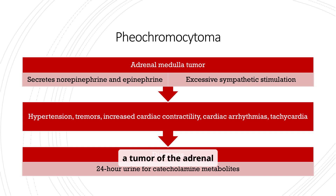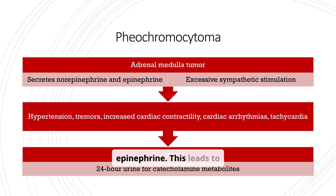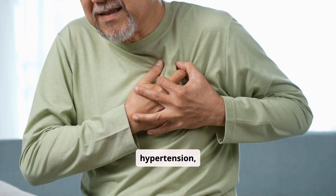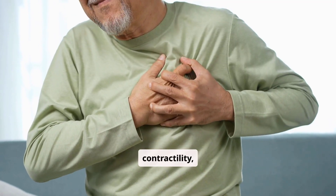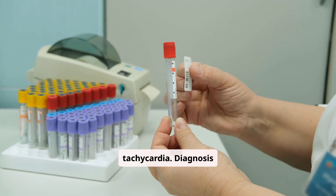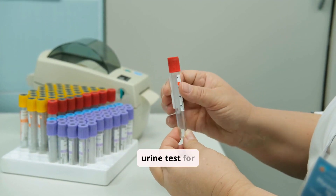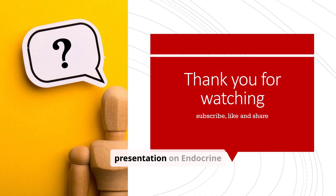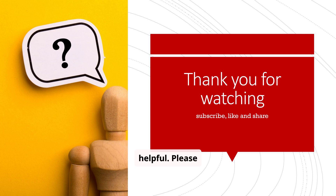Pheochromocytoma is a tumor of the adrenal medulla that secretes norepinephrine and epinephrine. This leads to excessive sympathetic stimulation, resulting in hypertension, tremors, increased cardiac contractility, cardiac arrhythmias, and tachycardia. Diagnosis involves a 24-hour urine test for catecholamine metabolites. Thank you for watching this presentation on endocrine disorders. Please subscribe, like, and share this video to help others learn about this important topic.